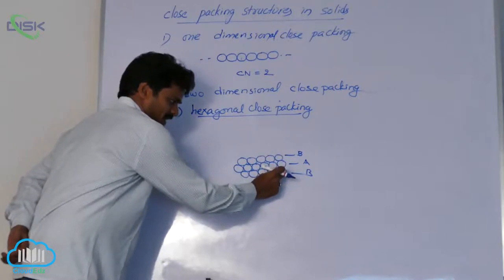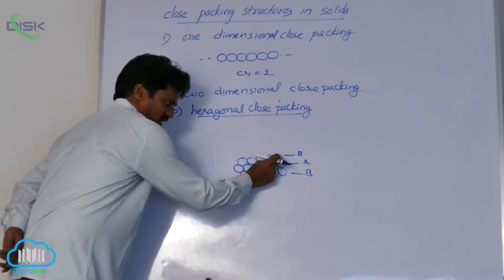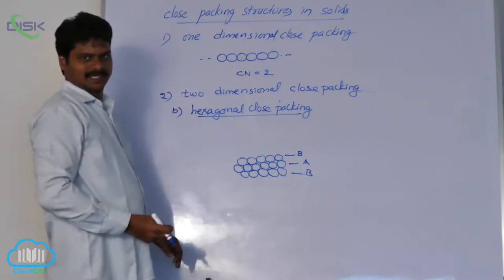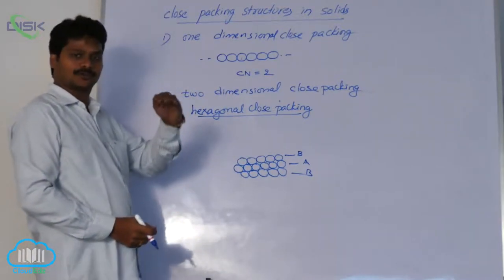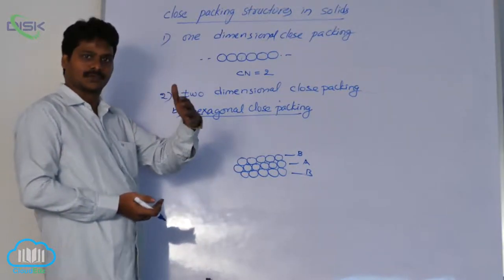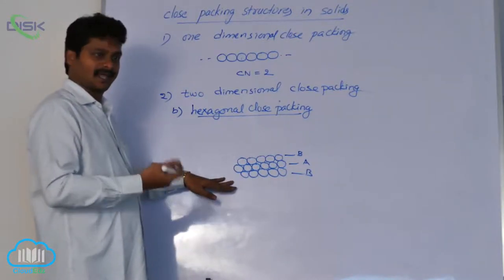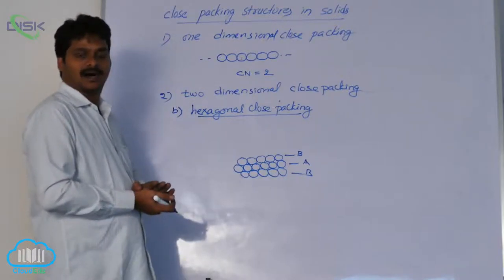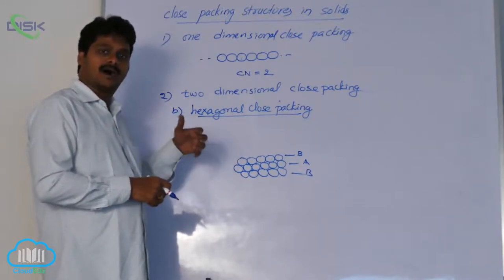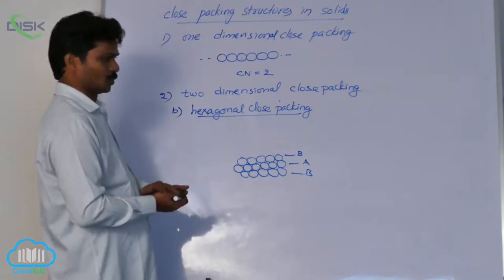The spheres of the first row and the spheres of the third row are aligned. Similarly, second row spheres and fourth row spheres are in alignment, and third row and fifth row are in alignment. So, all even-numbered rows are aligned and all odd-numbered rows are also aligned. This type of arrangement is called hexagonal close packing.